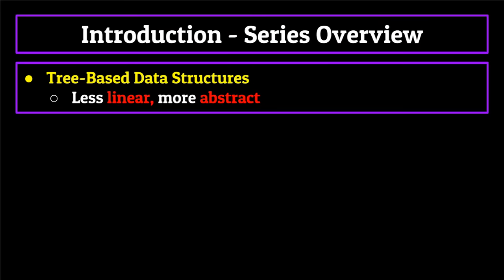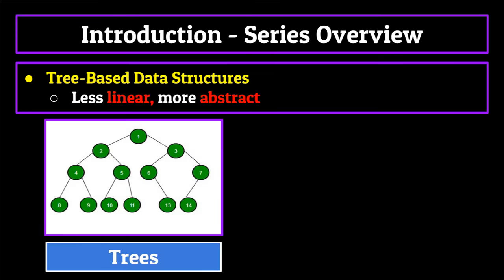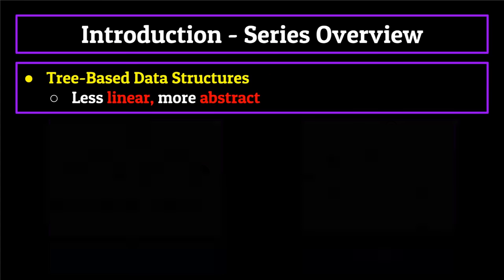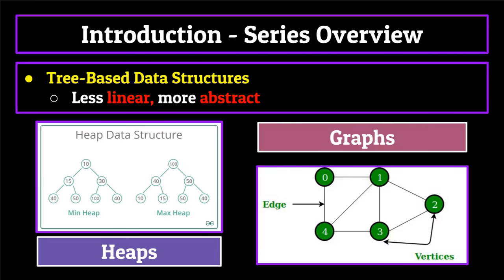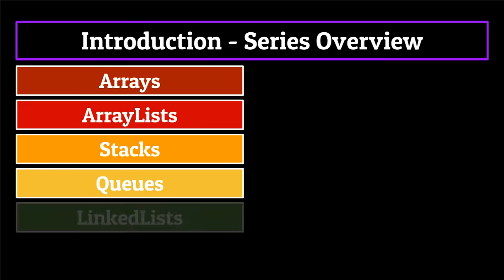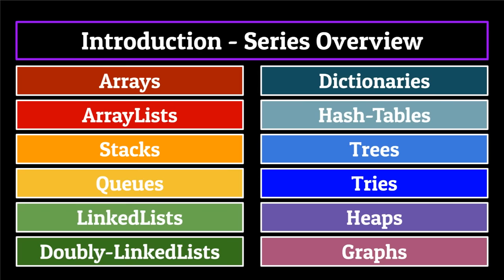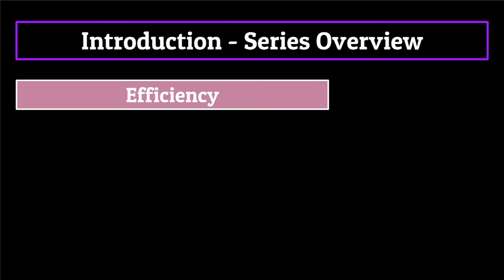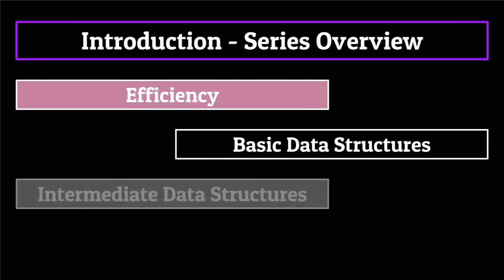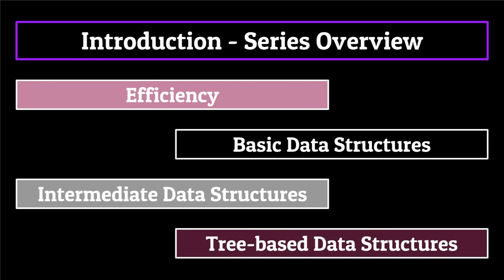In total, I'll be taking you through four different segments containing 12 of the most common data structures that are practically used, as well as providing examples of where and when to use them. Section one on efficiency, section two on basic data structures, section three on intermediate data structures, and wrapping it up with section four on tree-based data structures. With this knowledge, you'll be able to take charge of your programming career and hopefully gain a competitive edge by implementing them when needed. Before we jump straight into the different ways to store information, I'd like to have a quick discussion on how we score the efficiency of these data structures using what is known as big O notation. So let's jump right in.